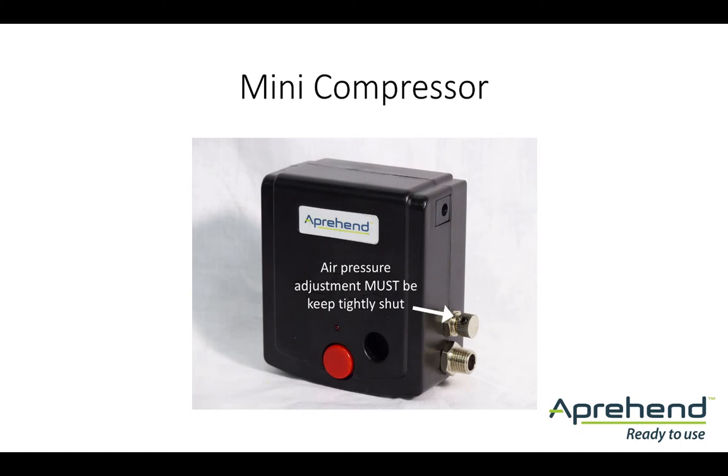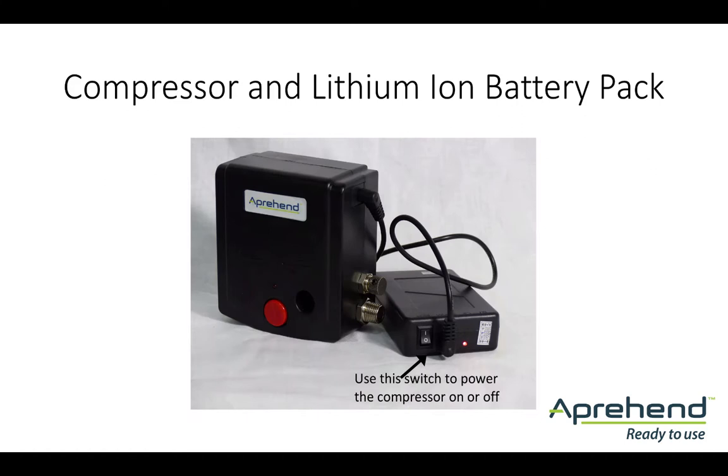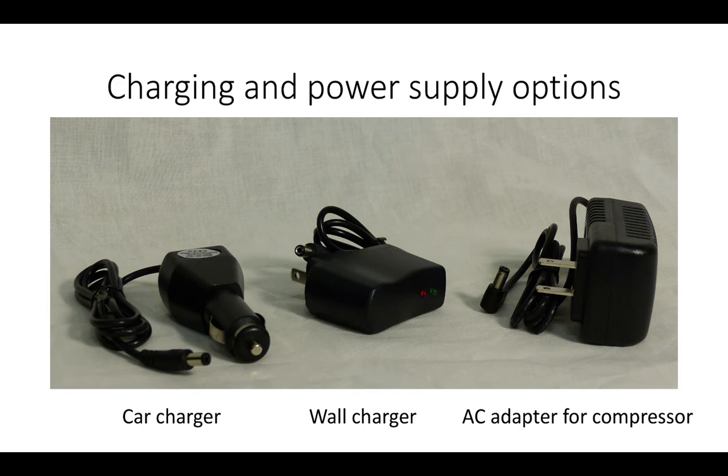The bottom port in this photograph is the air outlet. This will be connected to the gun by a coiled air hose. This image shows the lithium-ion battery pack connected to the compressor. Be sure to follow the enclosed instructions when using the wall charger.